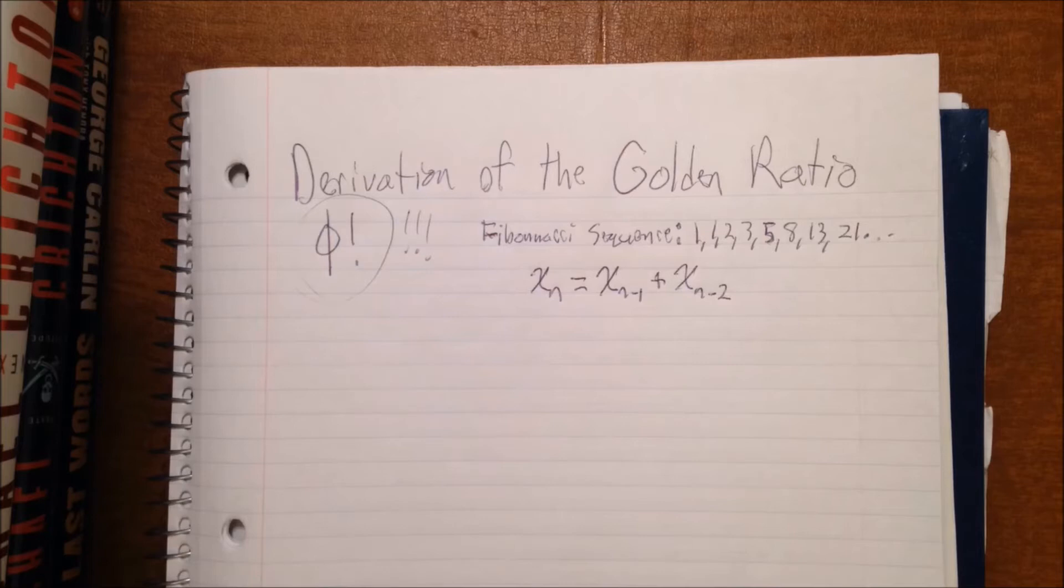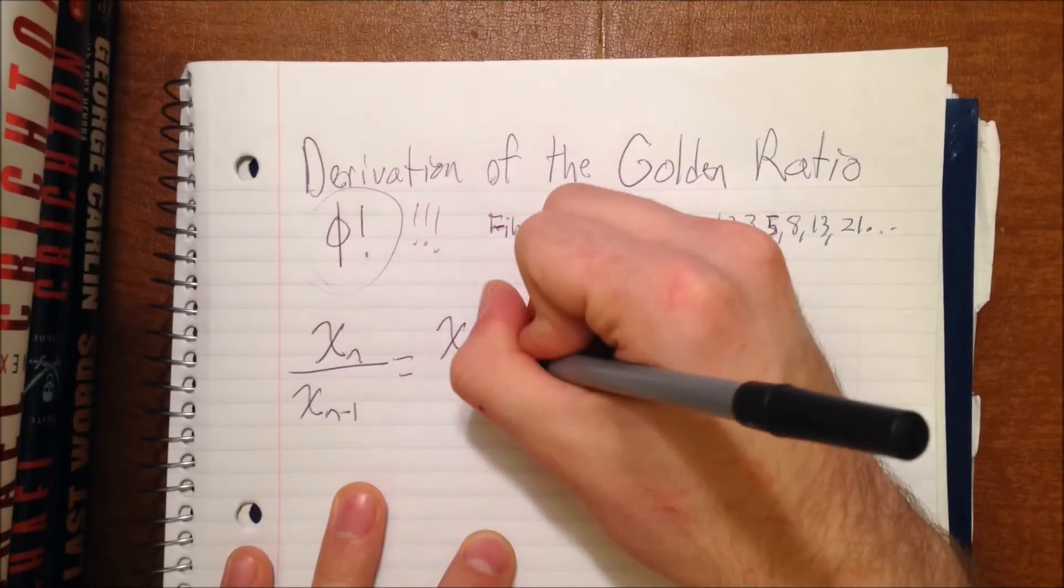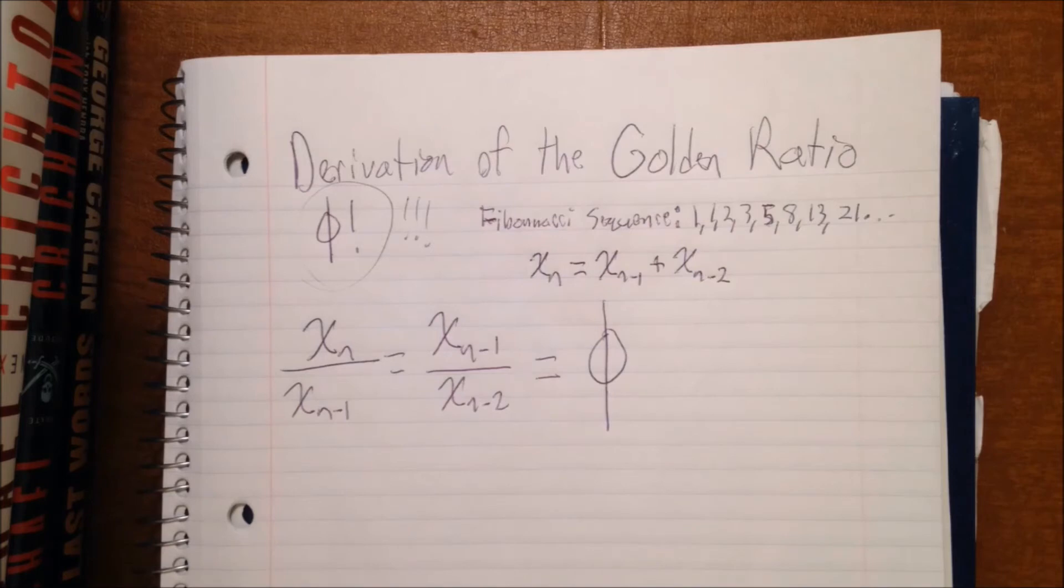So we said that phi is equal to the ratio of any two successive terms in the Fibonacci sequence, so we can say xn divided by xn-1 or xn-1 divided by xn-2 are both equal to phi, which means they're equal to each other.